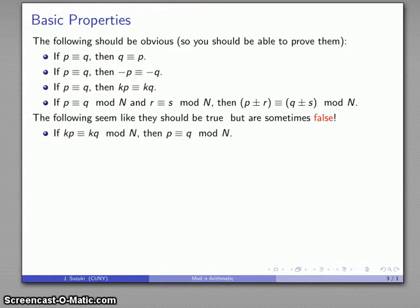One of the most important distinctions between modulo arithmetic and ordinary arithmetic is: if I have kp ≡ kq, in ordinary arithmetic I can drop that factor of k and have p ≡ q. Does this work in modulo arithmetic? Can I drop common factors? It turns out I can't.